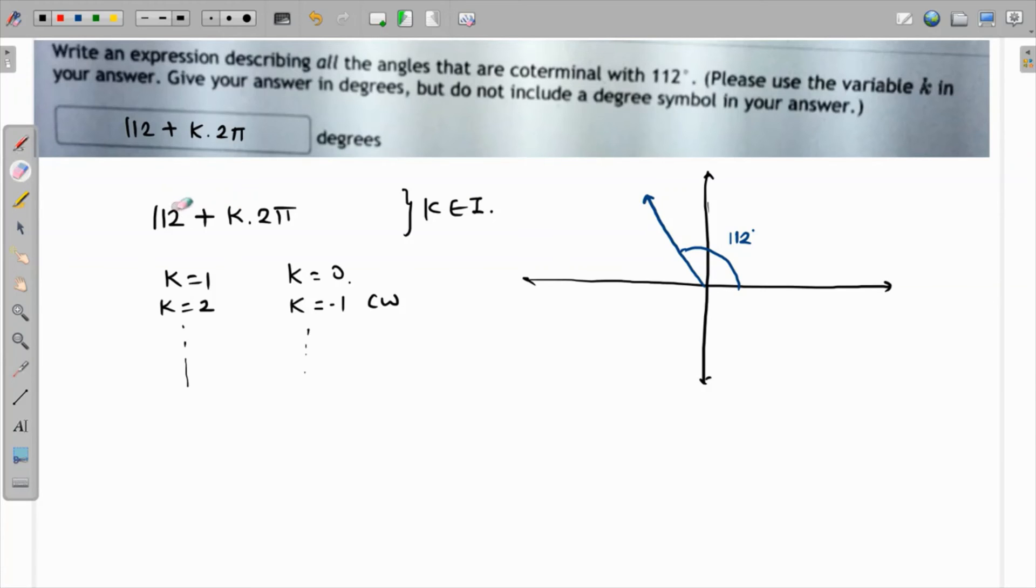One correction here: since 112 is written in degrees, we cannot write 2π because we also have to mention that in degrees. The degree equivalent of 2π is 360°, so we are going to write 360° here. A better way to write this is 112 plus 360k.